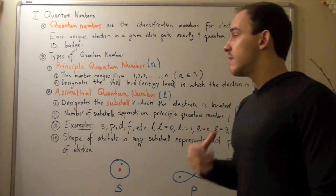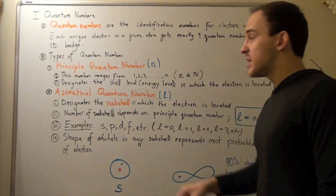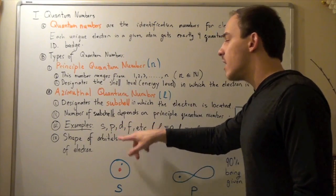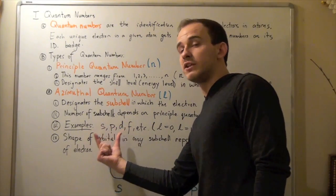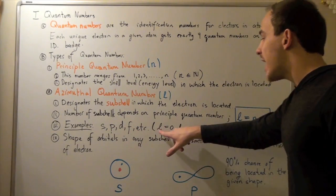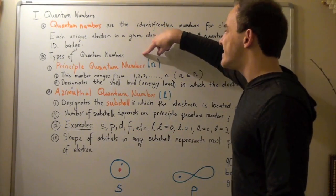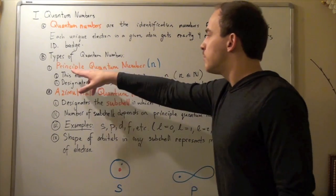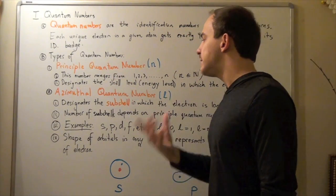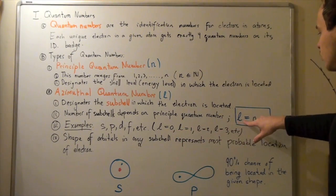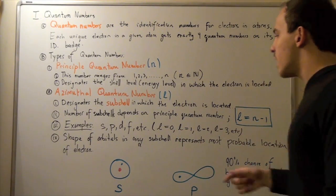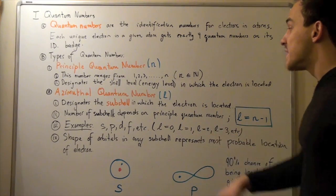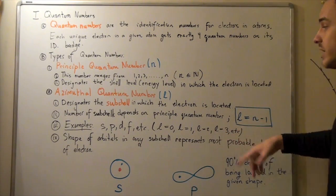The subshells are S, P, D, F, and so on — S, P, and D being the most familiar ones you should know. S corresponds to L equals 0: when N equals 1, L equals 1 minus 1 equals 0. P represents L equals 1. D represents L equals 2. F represents L equals 3, and so on.